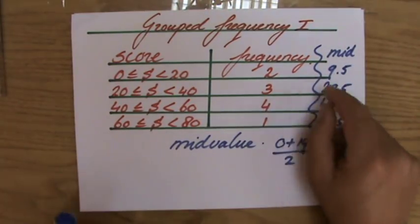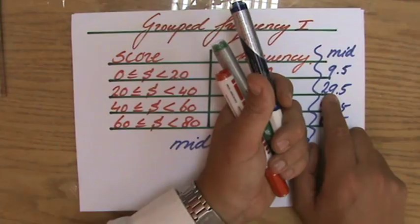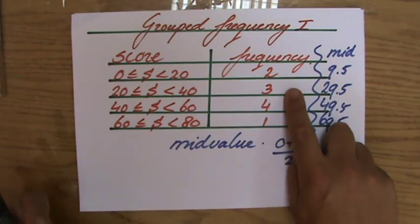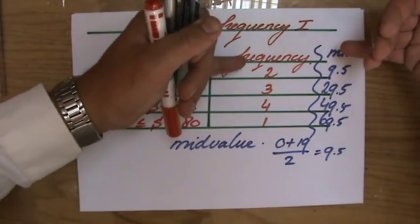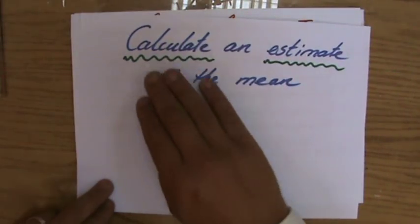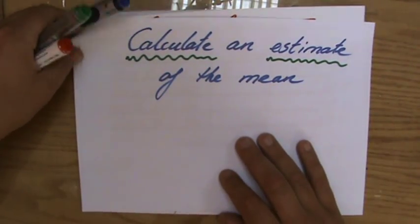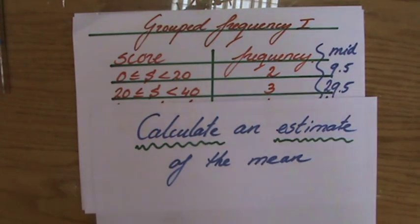I'm going to take the mid-value and say, okay, two people have a score of 9.5. Plus 29.5 times 3, because I'm going to say three people have a score of 29.5. And so I treat it now as a frequency table, as a normal frequency table. But that's why we are calculating an estimate of the mean, because we do not know the exact values of the information. But I can continue now.